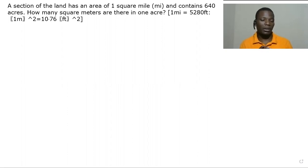Okay, so in this video we are going to solve a question on units and measurements. A section of the land has an area of one square mile and contains 640 acres.